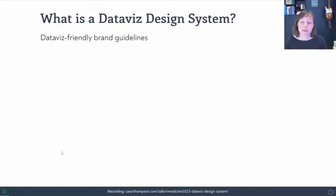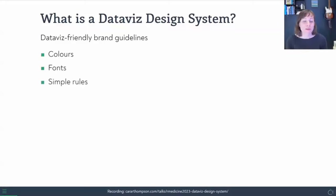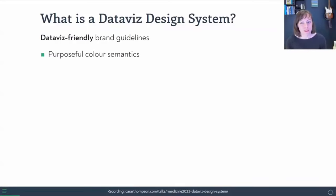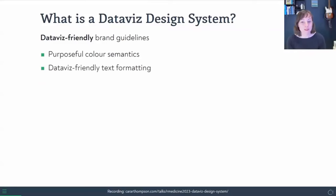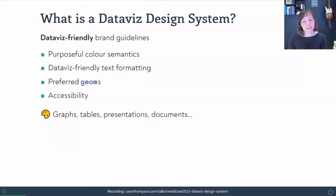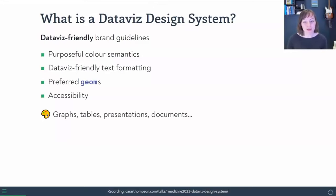So what is a data viz design system? The best way to think about it is data viz friendly brand guidelines. We've got a set of colors, a set of fonts, and some simple rules that we can follow to make sure that our plots always look nice and unified. What makes it data viz friendly specifically? We want to be thinking about purposeful color semantics — colors that evoke certain things you're talking about, certain metrics, or color intensity to signal more of something. We want data viz friendly text formatting, preferred geoms to use as a team, and mindfulness of accessibility guidelines. The constraints here are tighter than for generic brand guidelines, so we can apply this to our graphs, our tables, and outwards to our presentations and documents.